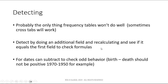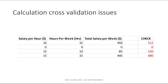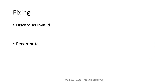You can add a field and recalculate things to see if it checks out. For dates, you can do date math — Excel will easily subtract any date values and you can look at them to see if it makes sense. Here's another cross-validation example with dates: people who died before they were born, which obviously doesn't make any sense. The ones where someone died and was born on the same day might actually be a stillborn baby, so that is actually possible. Another cross-validation issue would be a calculated column like total salary per week, which should be hourly wage times hours worked — if they don't equal each other, you have a validity issue.